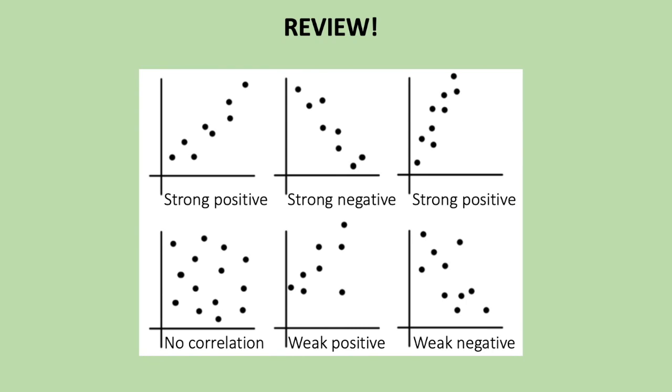In review, these are the correlations that you should be able to recognize and understand. So we have strong positive, increase on both axes, strong negative, increase on x-axis but decrease on y-axis, strong positive again. No correlation, where all the data points are super far apart. And then weak positive and weak negative, where they are still showing correlations but the data points are just a little bit further apart.